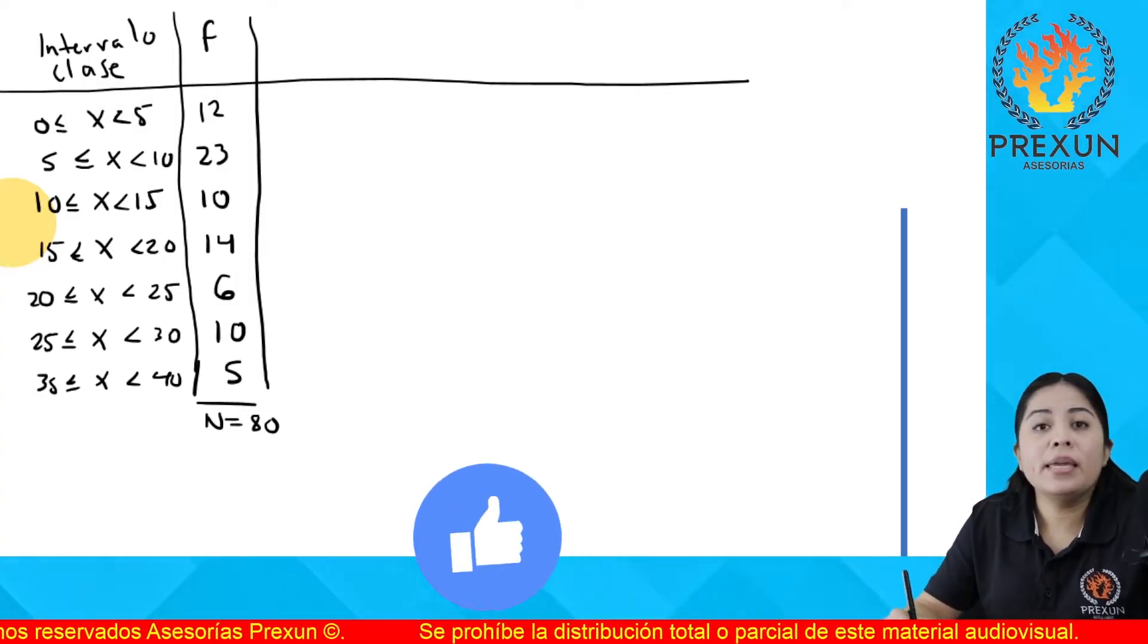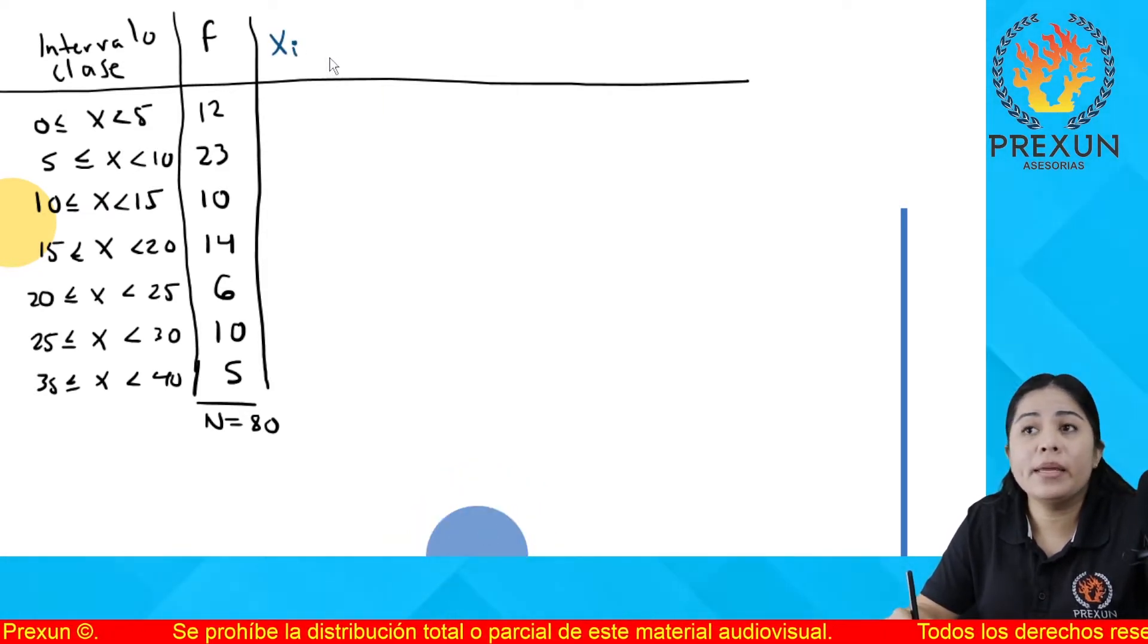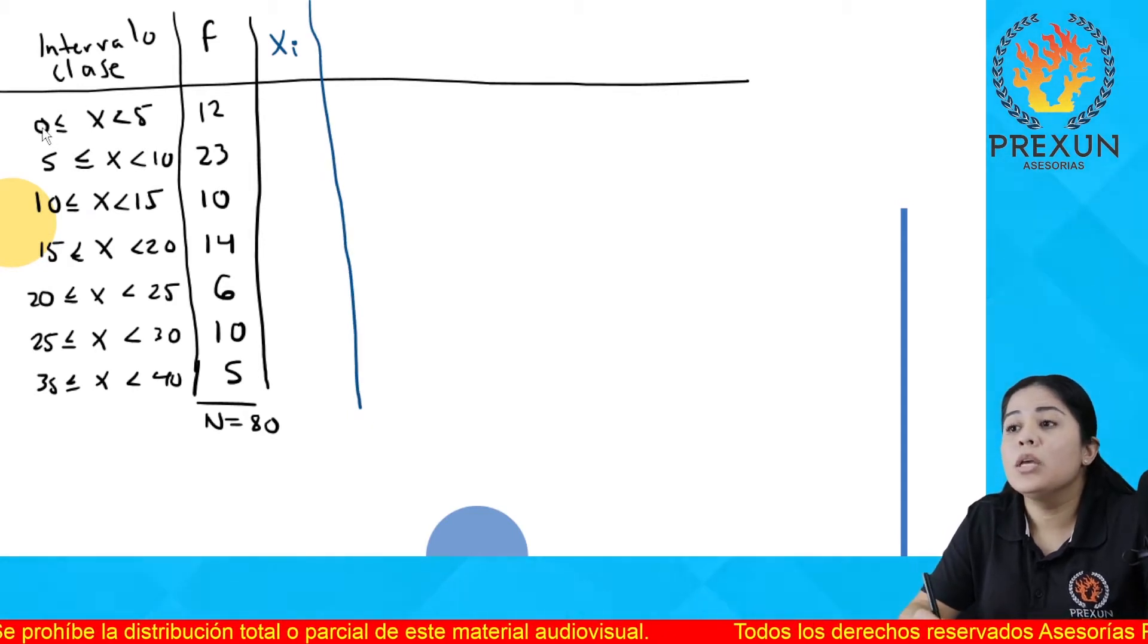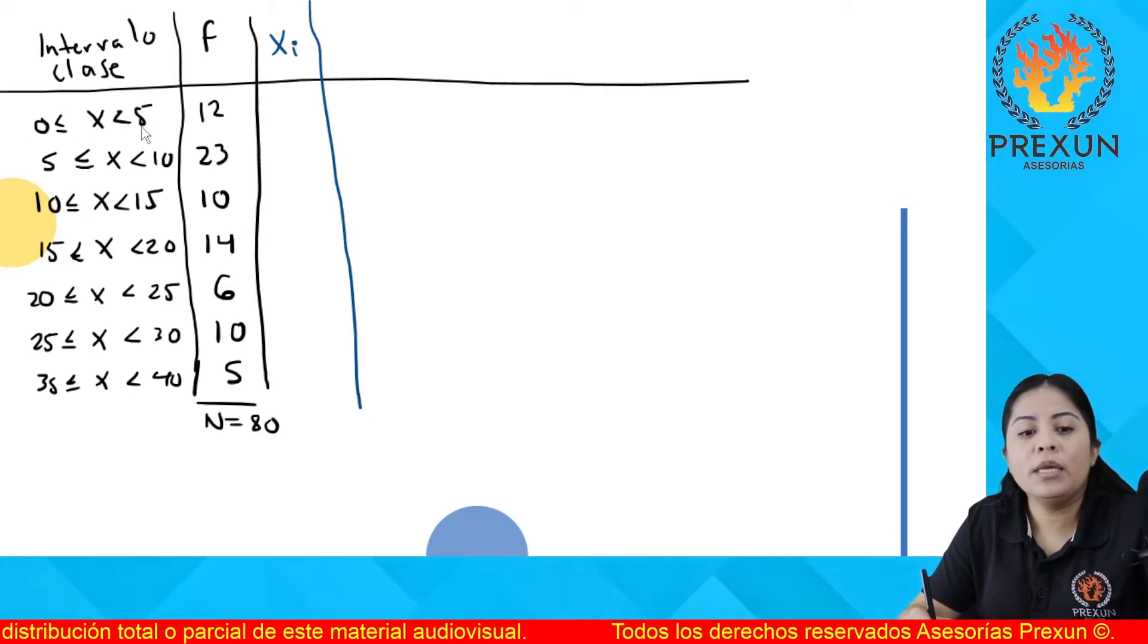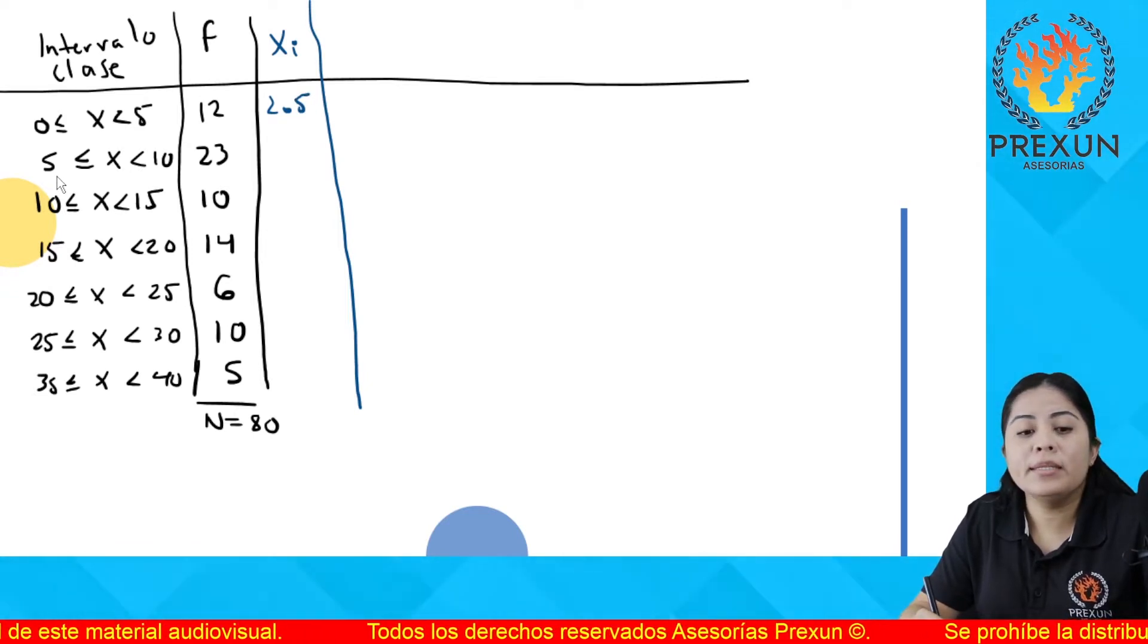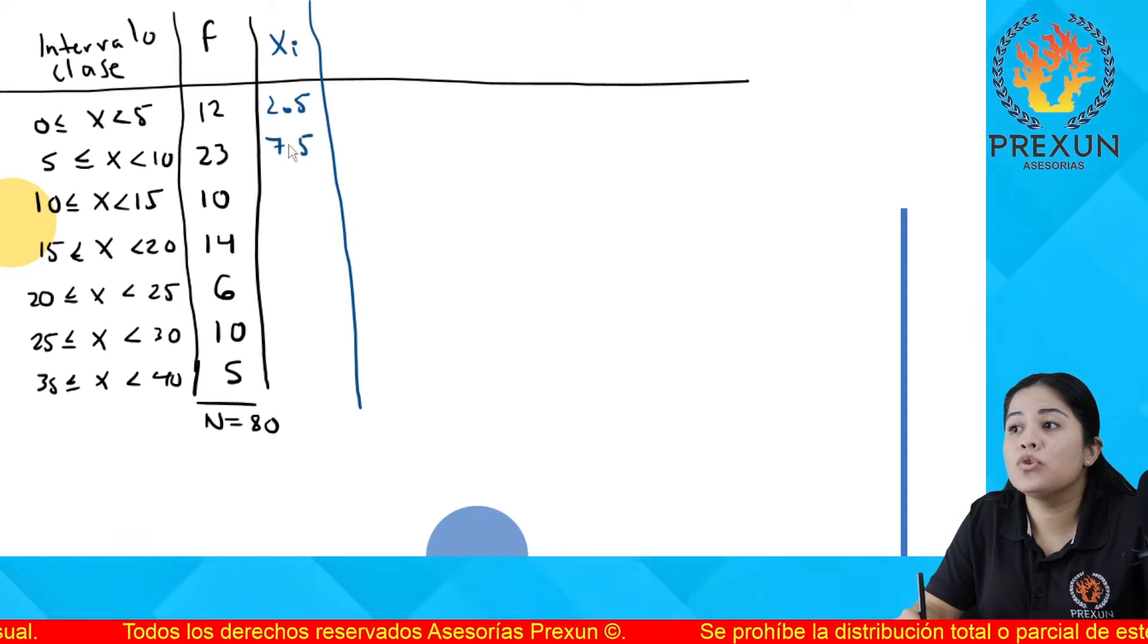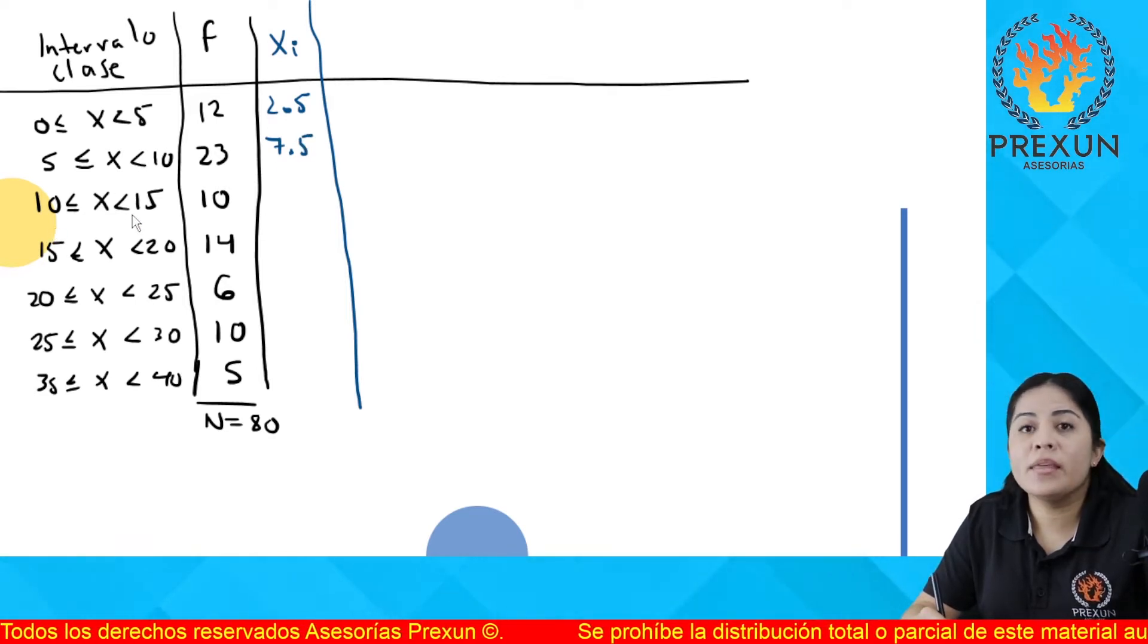¿Qué sigue de aquí? Vamos a obtener el x sub i que representa la marca de clase. ¿Cómo la obtenemos? Recordando es sumo 0 más 5 y lo que me dé dividido entre 2, 2.5. La siguiente, 5 más 10, el resultado dividido entre 2 es 7.5. La que sigue, 10 más 15, el resultado dividido entre 2 es 12.5.